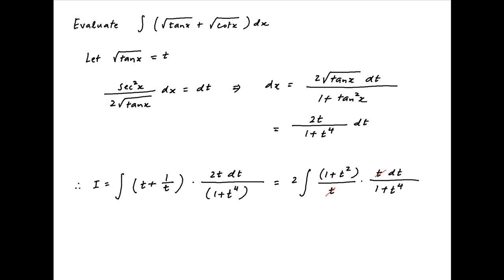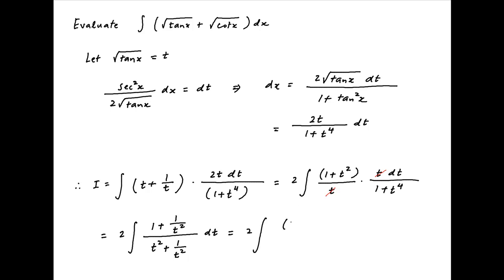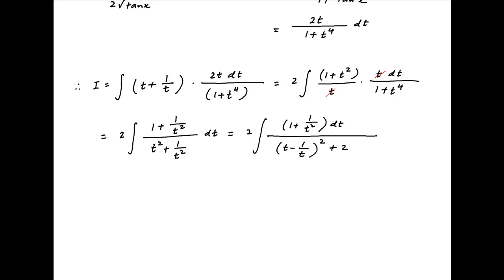The t cancels. Now dividing the numerator and the denominator by t squared, the value of i can be written as 2 times the integral of 1 plus 1 upon t squared, divided by t squared plus 1 upon t squared, dt. The denominator can be expressed as t minus 1 upon t, whole squared, plus 2.